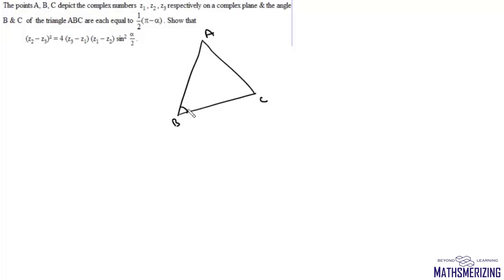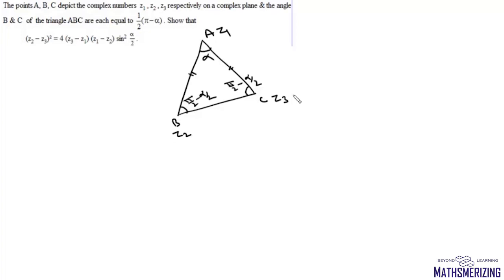Angle B and angle C are each pi by 2 minus alpha by 2, so angle A equals alpha. Since angles B and C are equal, AB must equal AC, making it an isosceles triangle. Here A is z1, B is z2, and C is z3.